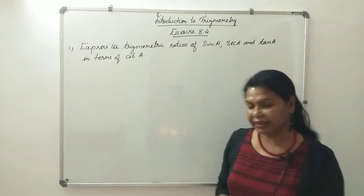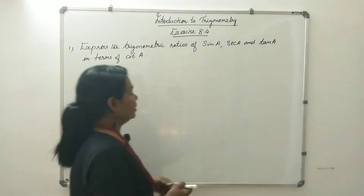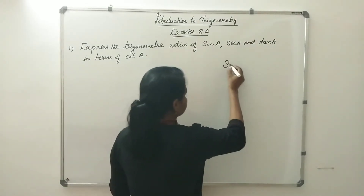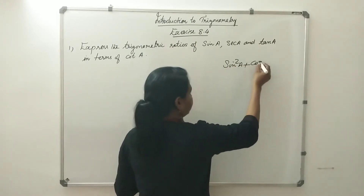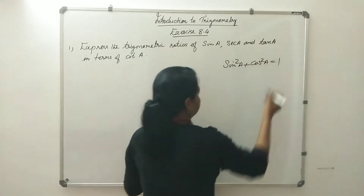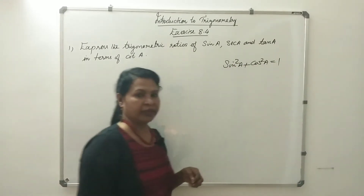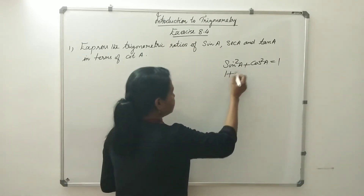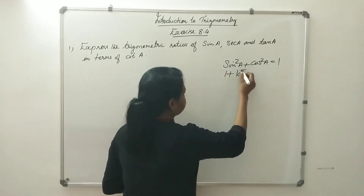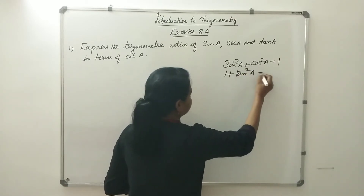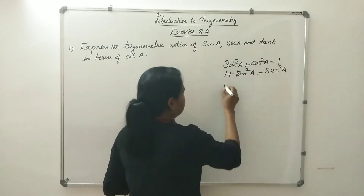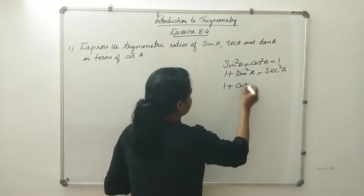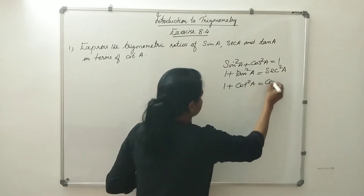What kind of identities? We will do the three. First: sin²A plus cos²A equals 1. The next one is 1 plus tan²A equals sec²A. And another one is 1 plus cot²A equals cosec²A.